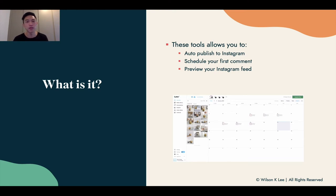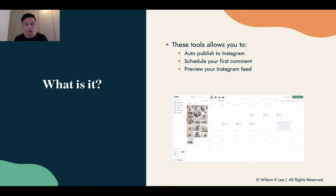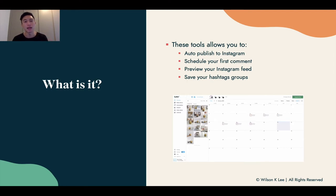If you want to make your feed much more aesthetically pleasing, you can put in your first 15 posts and play around with which picture goes where. Sometimes you want to put quotes, sometimes block text testimonials. This is a great way to play around with your Instagram feed so you can create something that looks beautiful. You can also save all the hashtag groups you created in the previous lesson, and automatically click a button to add all those hashtag groups to your posts.